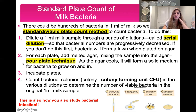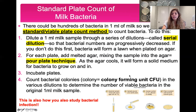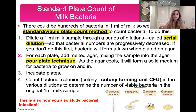This technique is called the pour plate technique, because you mix your sample — in our case the milk — with the agar, pour it onto a petri dish, and then incubate the plates. You then come back and count the bacteria. We count bacterial colonies, specifically colony forming units or CFUs. Colony forming units and colonies are basically the same thing, but the term CFU specifies that a colony can be formed by multiple organisms.